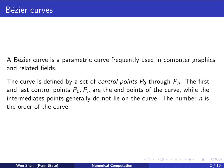The curve is defined by a set of control points. There could be n plus 1 of them, so they're labelled from P0 to Pn. The first and last control points, P0 and Pn, are actually the end points of the curve, while the intermediate points generally do not lie on the curve. They are used to control the shape of the curve. The number n is the order of the curve.